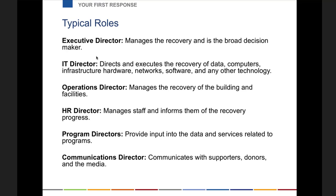A few typical roles: the executive director declares the emergency and sets priorities. You've got the IT director who takes care of technology. You've got operations dealing with the building and facilities. You've got HR dealing with staff. You've got program in terms of services. And then communications who is communicating with everybody. Those are a pretty good breakdown of the different roles you may need. Depending on your organization you may not need all of these or may need more, but it's important to understand the different functions that will need to be happening during an emergency.